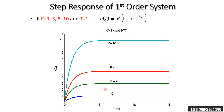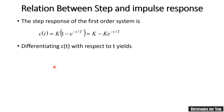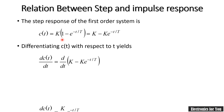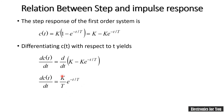By changing the value of K we change the amplitude of C(t). Differentiating the step response C(t) equals K(1 minus e^(-t/T)) gives dC(t)/dt equals K/T times e^(-t/T), which is the impulse response. Therefore differentiating the step response gives the impulse response, and integrating the impulse response gives the step response. This relationship holds for ramp and parabolic signals as well.